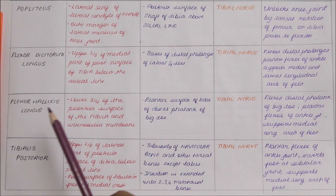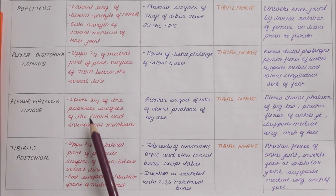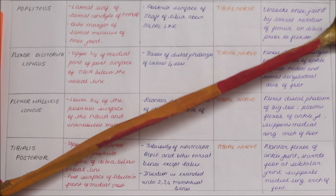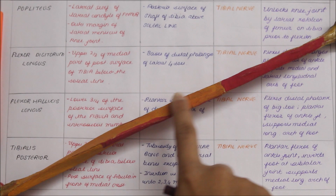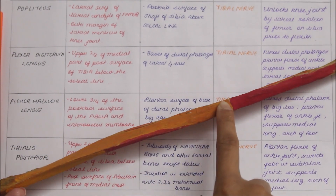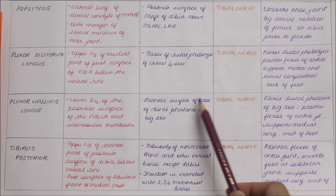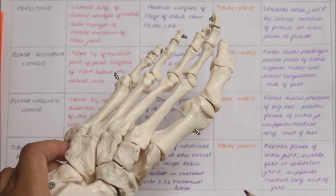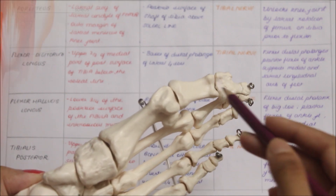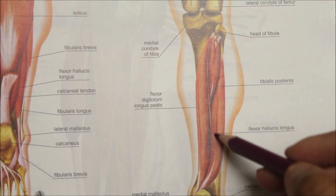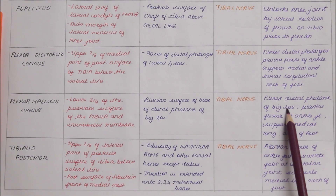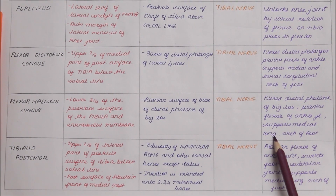Moving on to the next muscle, we have the flexor hallucis longus. It originates from the lower three-fourths of the posterior surface of the fibula and the interosseous membrane, marked in orange. It inserts into the plantar surface of the base of the distal phalanx of the big toe. The flexor hallucis longus is supplied by the tibial nerve. Its action is that it flexes the distal phalanx of the big toe, acts as a plantar flexor of the ankle joint, and supports the medial longitudinal arch of the foot.